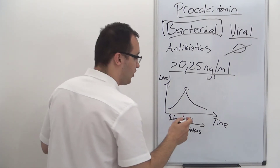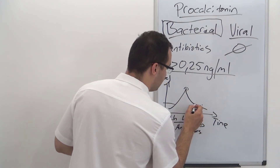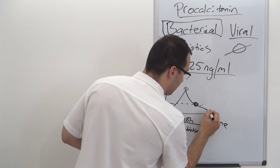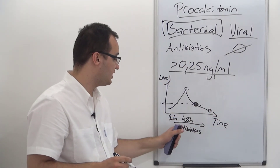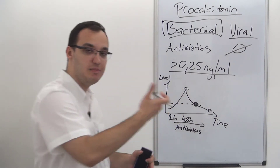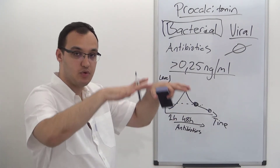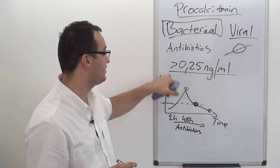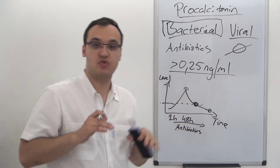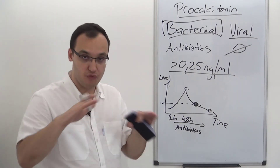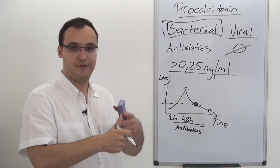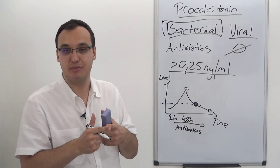For example, if you see that the procalcitonin level has dropped to 0.25, it's better to stop antibiotic treatment a little earlier rather than continuing longer, because giving antibiotics for a longer time builds up resistance. It has been shown that we can decrease resistance by using procalcitonin-guided therapy. So if the level gets less than 0.25, the patient needs to be afebrile — no fever for more than two days — and the patient should be stable.